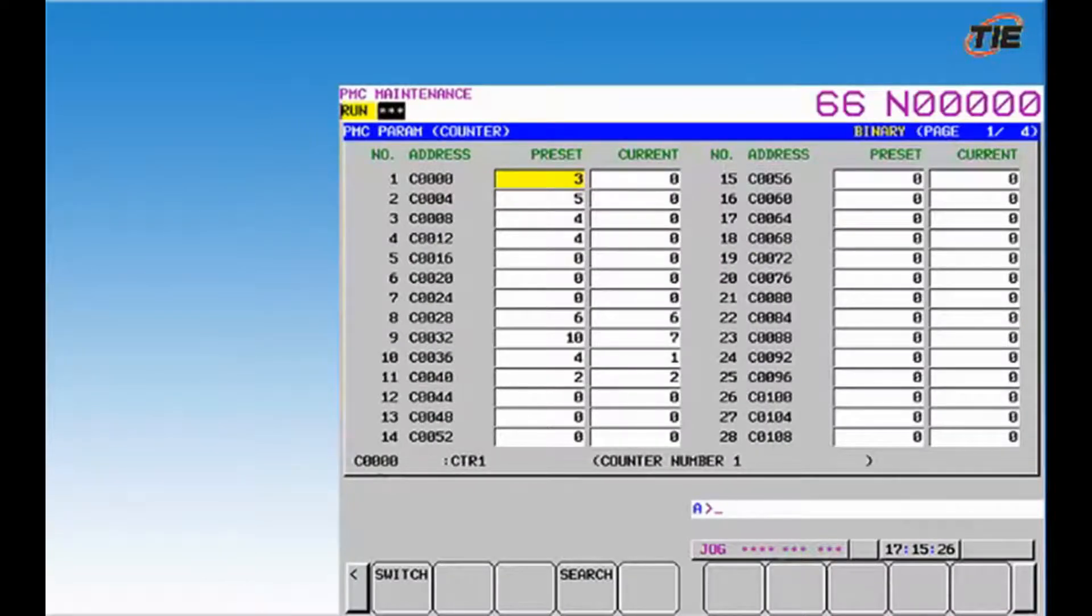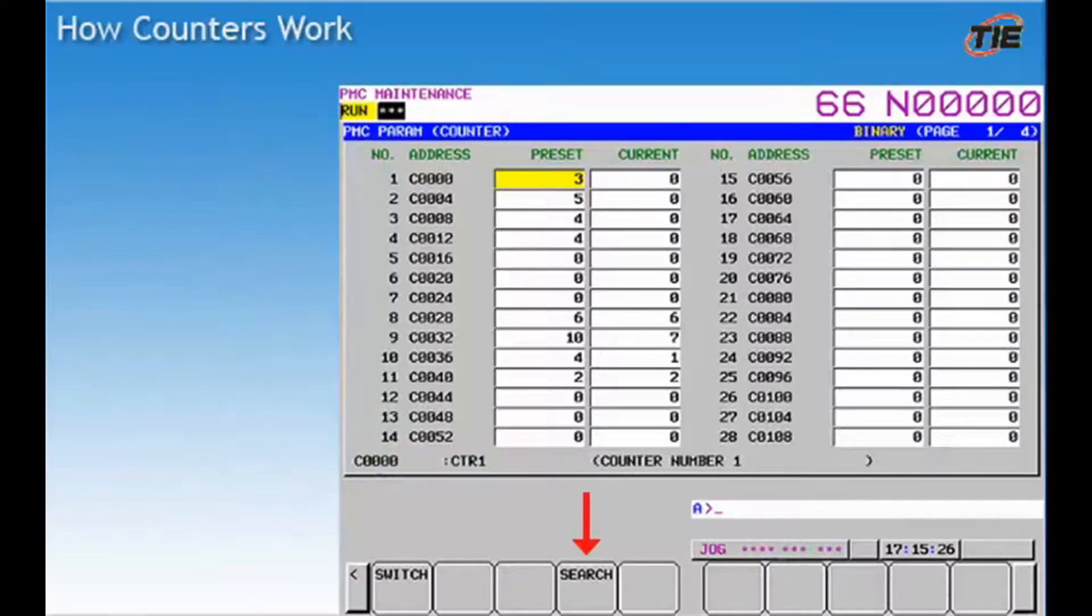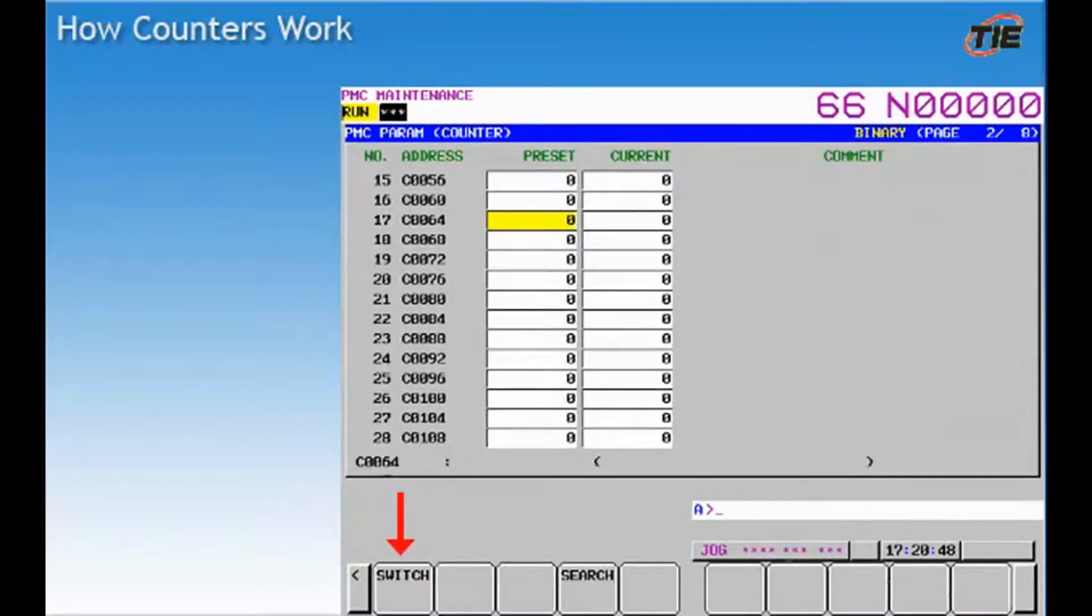Just like the TMR sub 3 timer, the CTR sub 5 counter can be set in the PMC maintenance page found under counters. You can change the preset and current values here for the sub 5 counters. As I mentioned before, be careful not to use the counter address. Only work with the counter numbers when making changes. This will really screw up your machine if you don't. Also, like timers, you can do an operation on the page that will allow you to search for a counter number. In addition, the switch button will switch you back and forth between the counter values and any description that the machine tool builder may have put in.